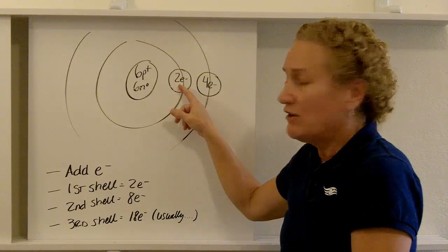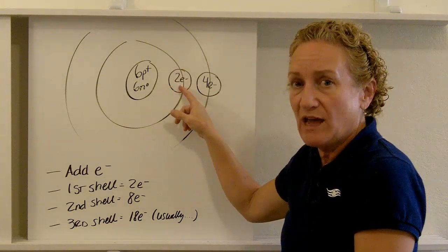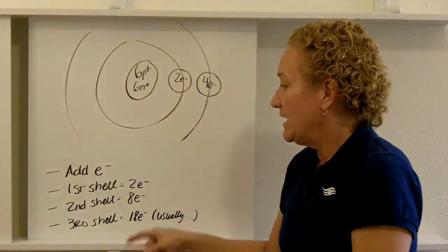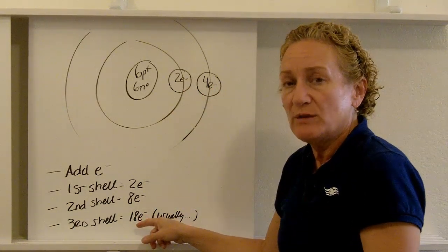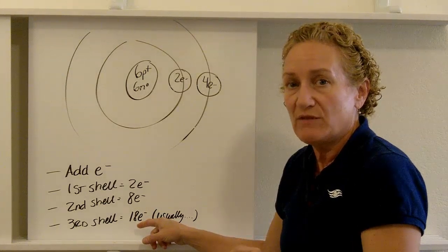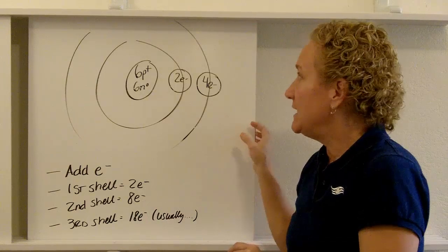Now, I've already put two in here of my six, which means I have four left. If I have four left, those four go in here and I'm done. The third shell, I just want you to know, can hold up to 18, but it doesn't always hold 18. And I'll give you an example of that in just a minute. But the third shell can hold up to 18.